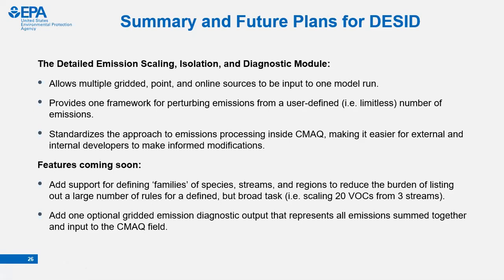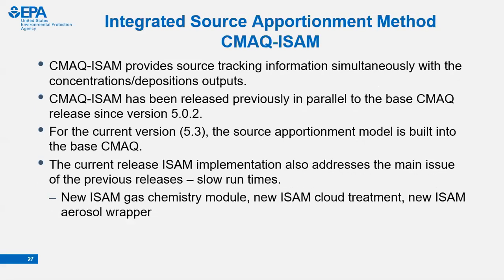To summarize, the new DESID module allows multiple gridded inputs, multiple point source and online source inputs, combines them into one easier-to-understand framework, and allows flexible perturbation of emissions in a clear way. Features planned for the near future include support for defining families of species, streams, and regions — so instead of listing rules for 20 individual VOCs, you can define a VOC family and apply one rule — and an optional gridded diagnostic output representing the sum of all emissions together. With that, I'll turn it over to Sergey, who will talk about source apportionment.